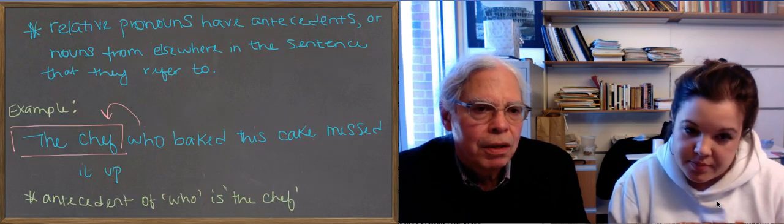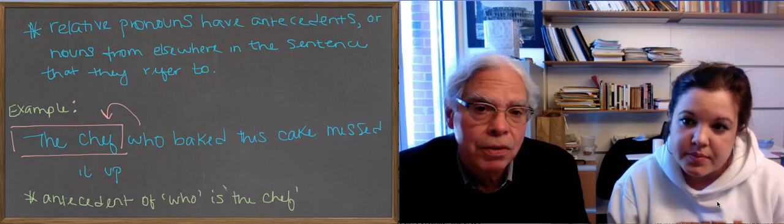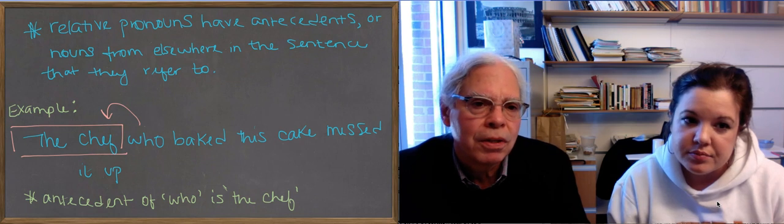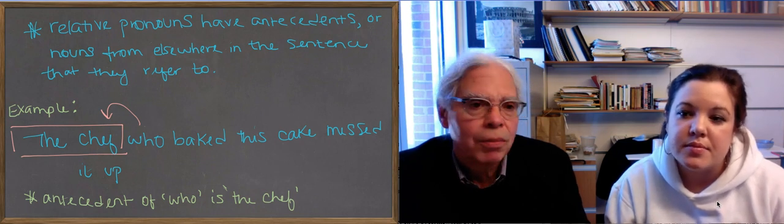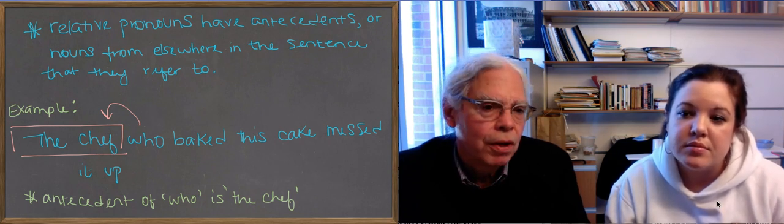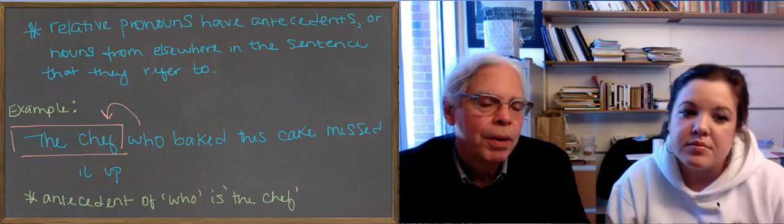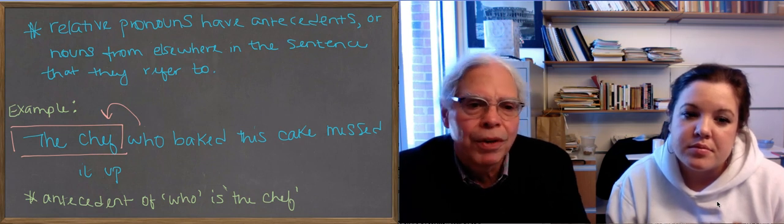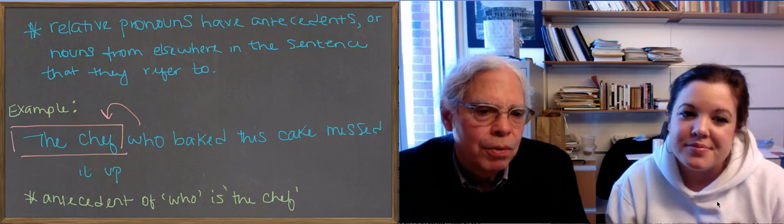In ancient Greek, relative pronouns have, and in English, they have antecedents. So we need to introduce this concept of what an antecedent is. So we defined it for you, it's antecedents or nouns from elsewhere in the sentence, or in the context sometimes, that they refer to. So in our example, the chef who baked this cake messed it up, the who points back at the chef. Usually the antecedent comes before, that's what ante means. So the antecedent of who is the chef.